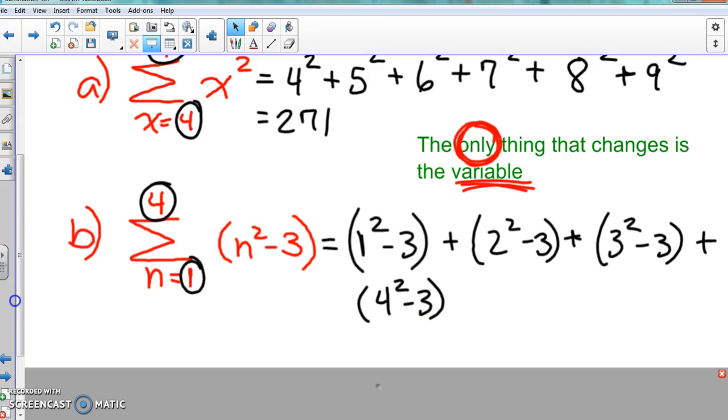Again, the only thing that changed was the variable, which is the letter N for this problem. It's the only thing that changes. So again, let's go ahead and add those up. Hopefully you hit pause really quickly. I'm going to calculate it. Make sure you know how to do it. Take pause. The answer should be 18.